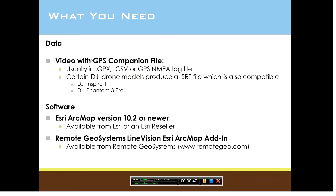Of course, we're going to need the software. If we're going to put this in Esri, we're going to have to already have the Esri ArcMap software installed — we're compatible with version 10.2 or newer. You can get that through Esri or an Esri reseller if you don't already have it. And of course, you're going to need the Remote Geosystems Line Vision Esri ArcMap add-in, which is available through Remote Geosystems.